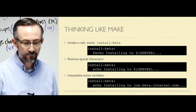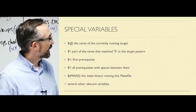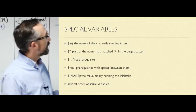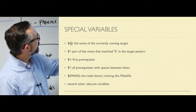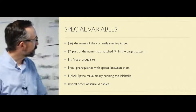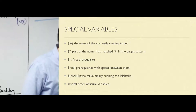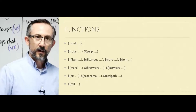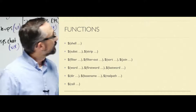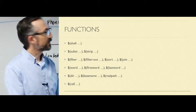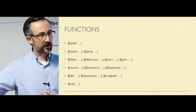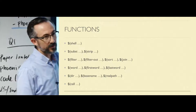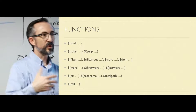Make has a variety of special variables that I hinted to earlier. I'm not going to get into these specifically, but you should know that they're there — they can be very useful. This is the name of the currently running target; this is the part that matched the percent sign in a pattern, and so forth. Make also has some built-in functions that are very useful. The shell function does what you might expect — it calls out to the shell. Whatever is in the ellipsis here will be handed to the shell and the output will be captured. You might have some variable equals dollar-shell, and that's how you go out to the shell and get something and put it into a variable.